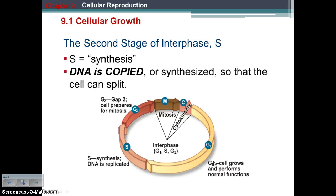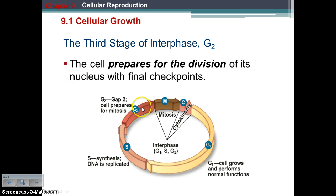Then comes the S stage — the synthesis stage — of interphase. What is being synthesized is DNA; this is where you have DNA synthesis or DNA replication. The DNA is copied so that the cell can split and produce two new cells that have full sets of DNA. This is a very important step. Finally, we have G2 of interphase, where the cell does its last checkpoints to make sure it's ready to divide — that the DNA was duplicated correctly. You don't want to divide a cell that has errors, or you'll make more cells with those mistakes.